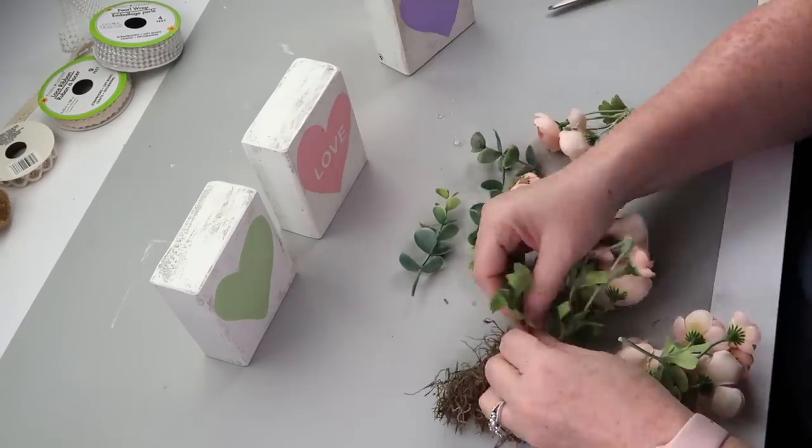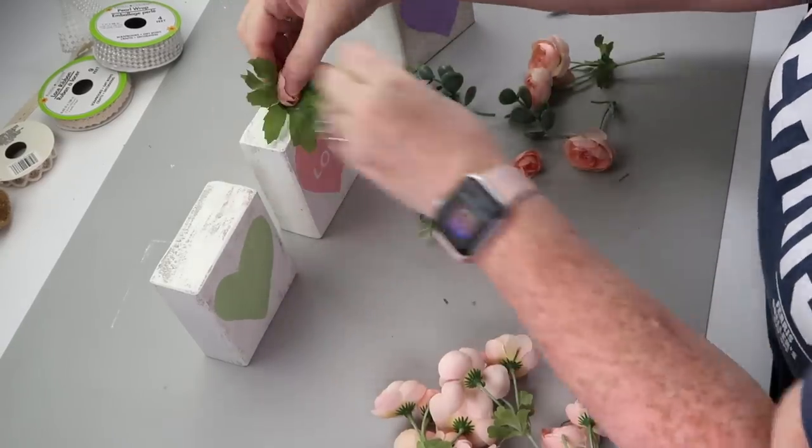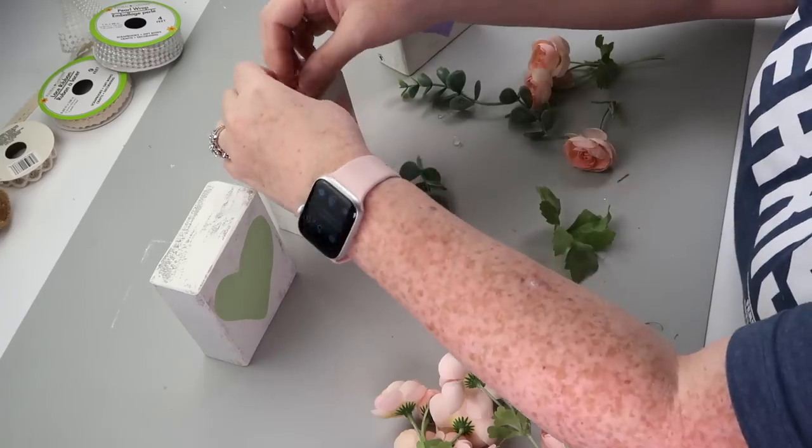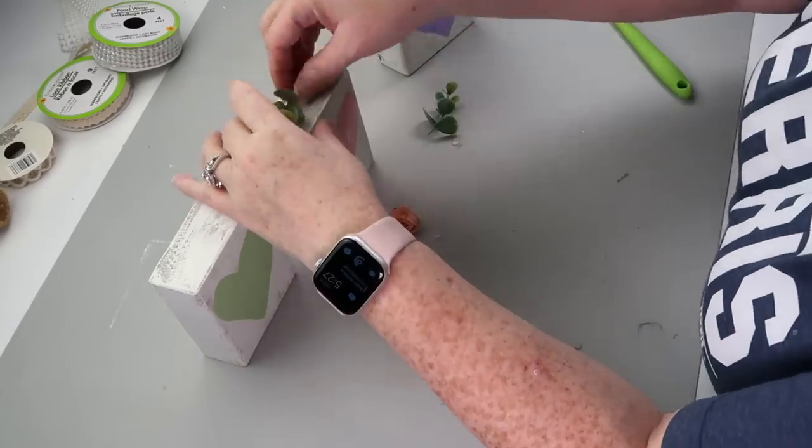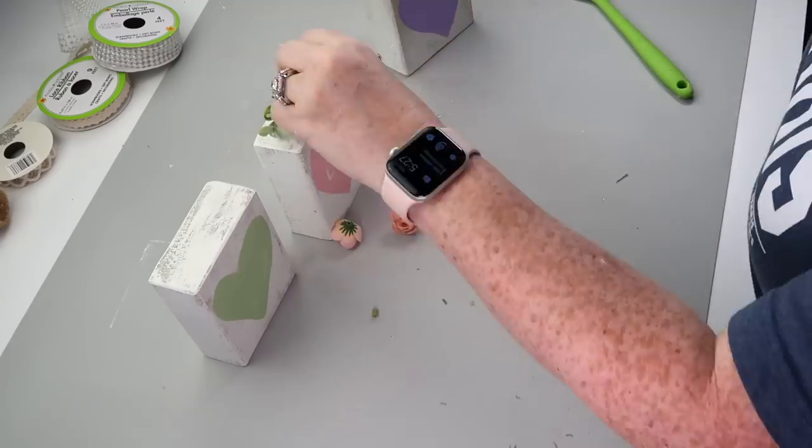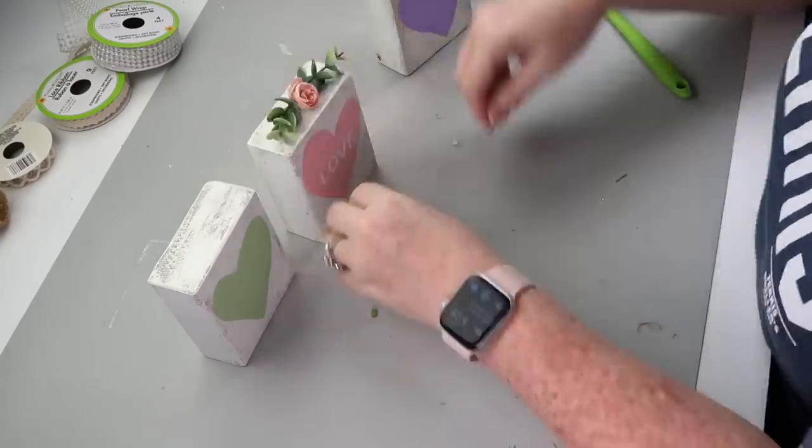I went through and rummaged basically my entire stash, grabbing ribbons, grabbing lace, grabbing burlap, grabbing all kinds of things, trying to figure out how I wanted to embellish just this middle one that had the word love on it. Ultimately, what I decided on is just hot gluing down some greenery and some of these little roses and then I called it good. This is a perfect little display that you can put anywhere in your home.